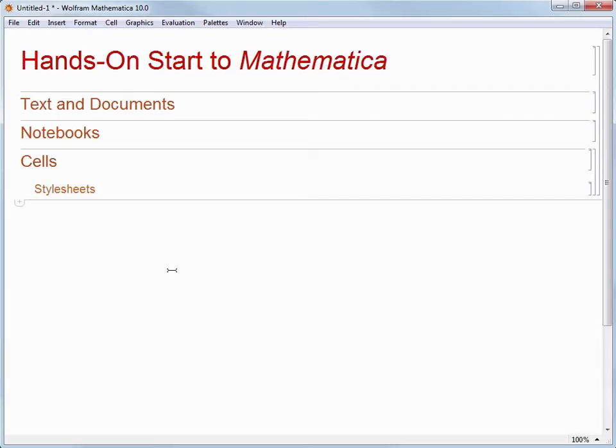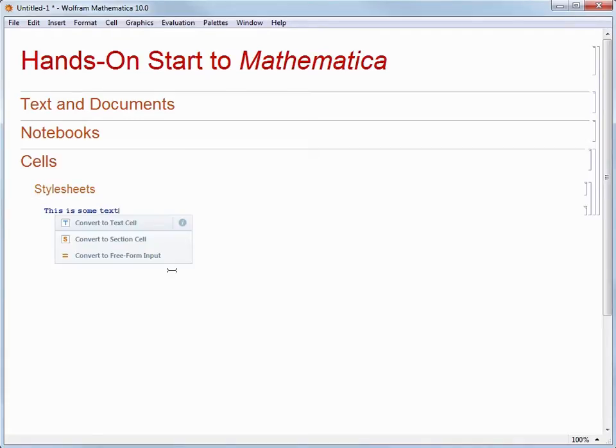This time, we are going to just start typing. Let's type, this is some text. Mathematica recognizes that we are not typing in any Mathematica commands, so it suggests that we might want to convert what we've done into a text cell, a section cell, or freeform input. For now, let's just choose TextCell.